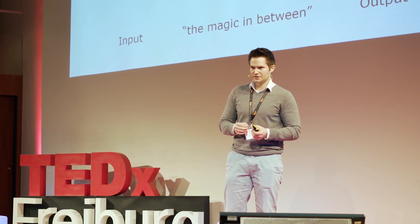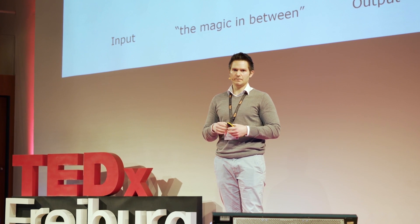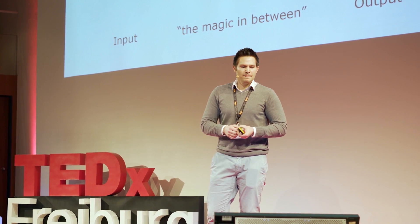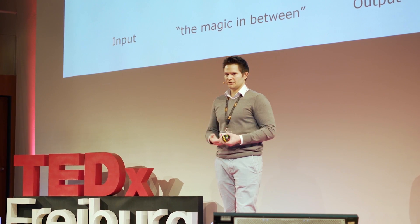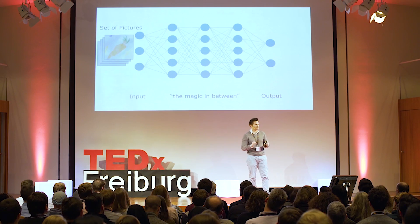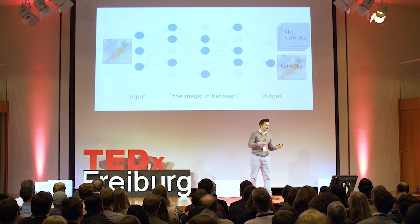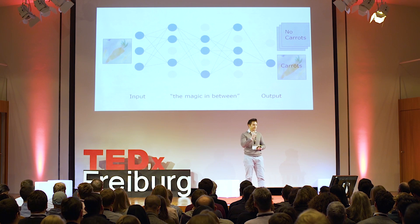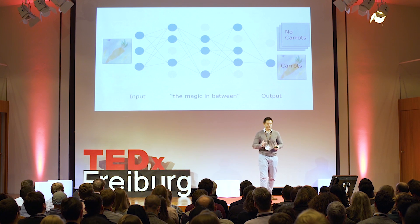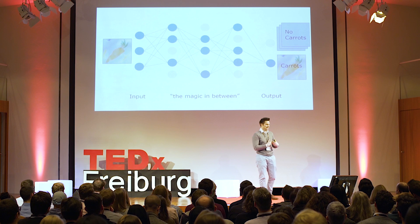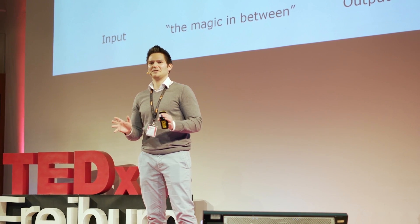Think about millions of pictures — the only thing you need to tell the machine is: in some pictures there are carrots, and in others there's other stuff, like elephants and penguins. You need to transfer these pictures into a machine-readable language, feed it in, and then something happens — I call it the magic in-between. The machine learns that in some pictures there's a specific structure, a specific shape — and that's our carrot. Whenever you feed in a carrot, only the lower output neuron fires. And whenever you feed in an elephant, the upper neuron fires. And that's basically all the magic behind neural networks.